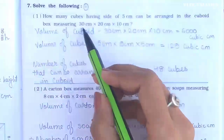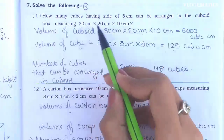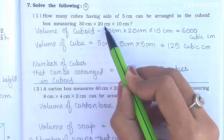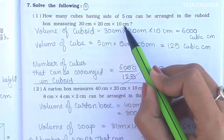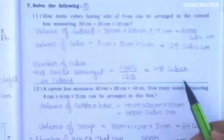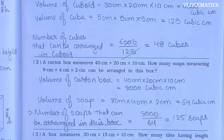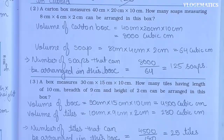48 cubes can be arranged in the cuboid measuring 30 cm × 20 cm × 10 cm. So the answer is 48 cubes. Now, next: number 2.